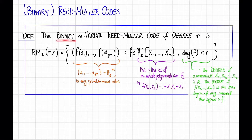The binary M-variate Reed-Muller code of degree R is defined as follows. We're going to use the notation RM sub 2MR, and it's defined in a way similar to Reed-Solomon codes. It's the set of all vectors, which are the evaluations of some F on evaluation points alpha 1 through alpha 2 to the M, where F is an M-variate polynomial over F2 of degree at most R. Here, the evaluation points alpha 1 up through alpha 2 to the M is just the set of all possible evaluation points in F2 to the M. So each of these alpha i's is a binary vector of length M.